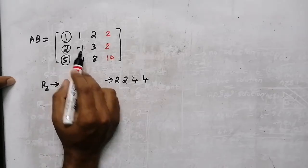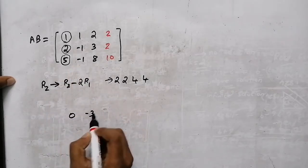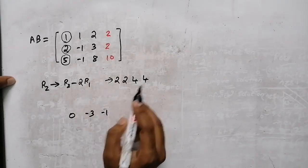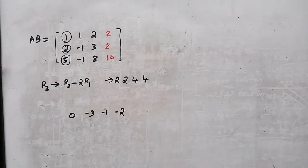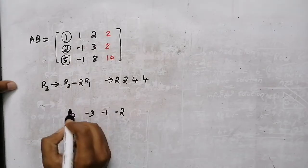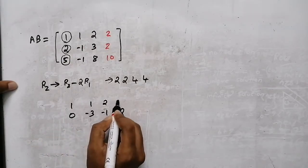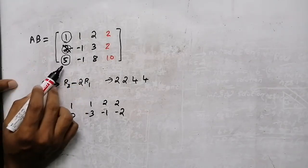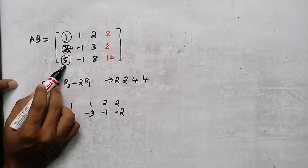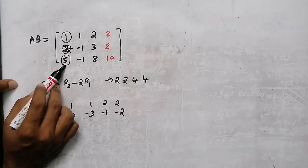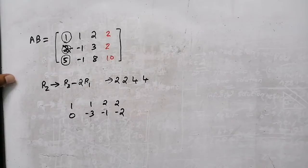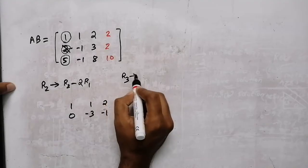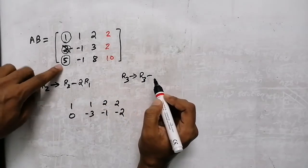After row operations we get: 0, minus 1, minus 2, 3, minus 4, minus 1, 2, minus 4, minus 2. We identify the first row, second row — here in the first row we have 1, 2 — and we can make certain entries 0 using row operations.